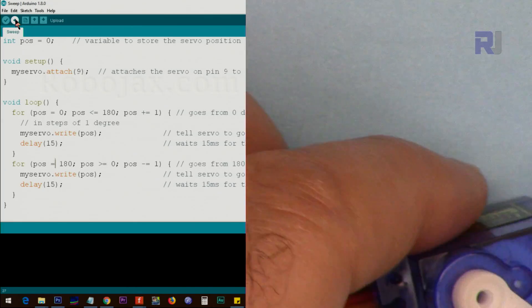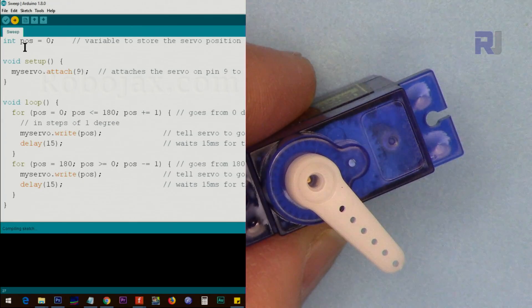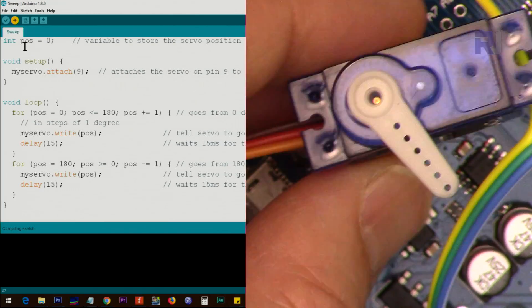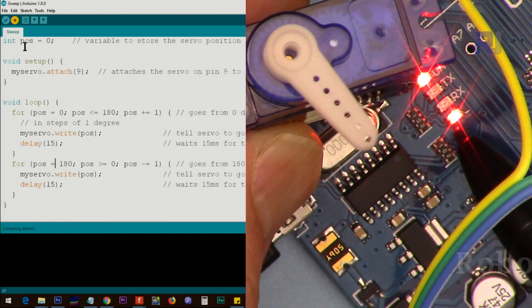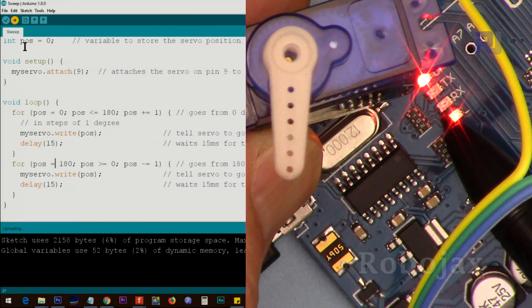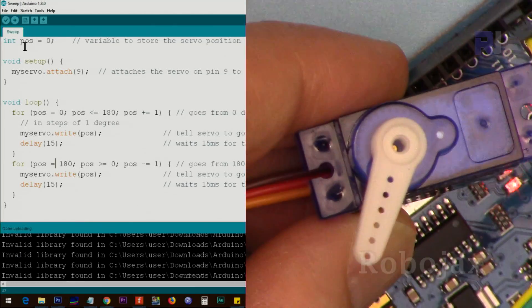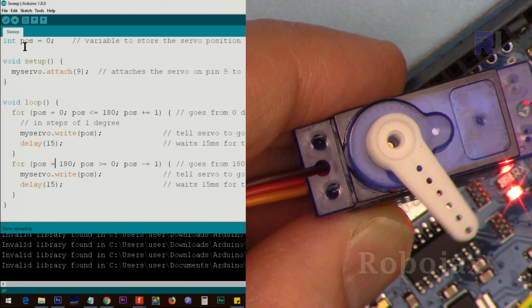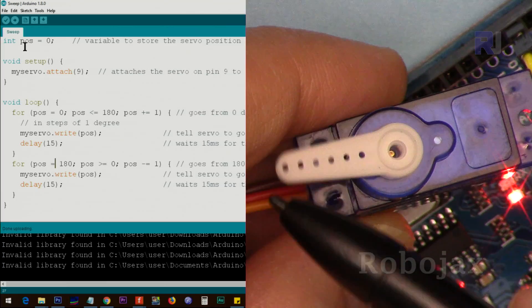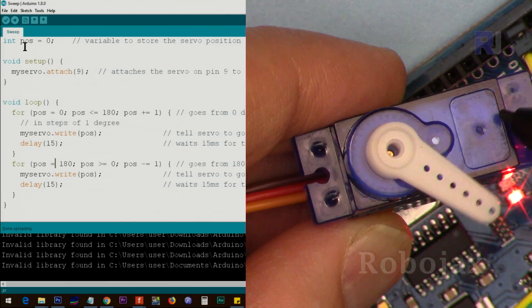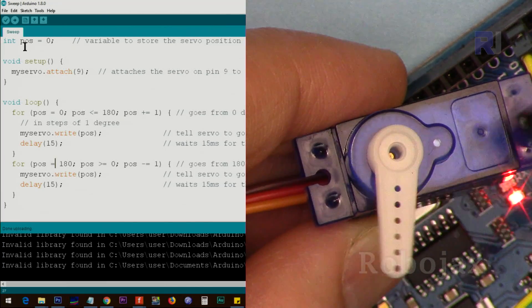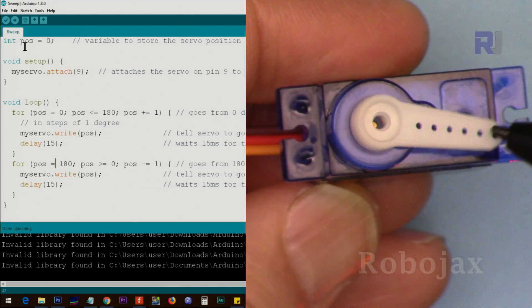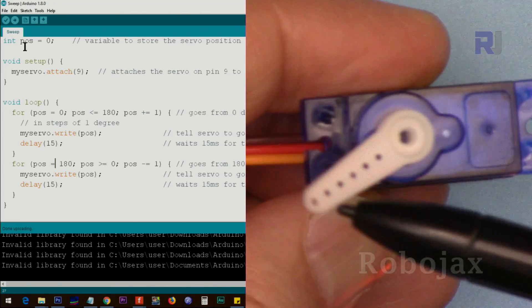Now I will upload the code. I'm uploading the code. Once the code is uploaded, this will continuously start rotating. Let's see when the upload is finished, you will see. Okay, so this side is 180 and this side is zero. I can remove and put it properly. Now I have put it such that this is zero and there is 180.